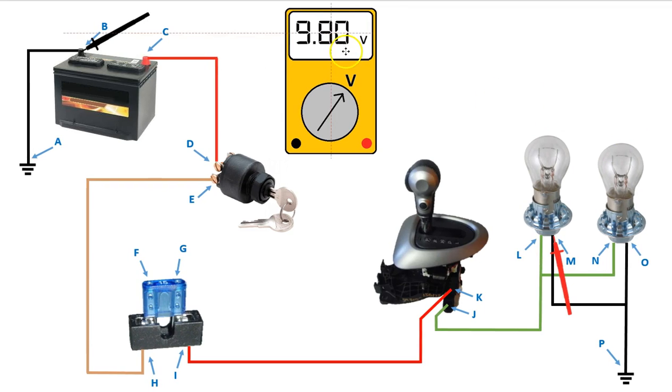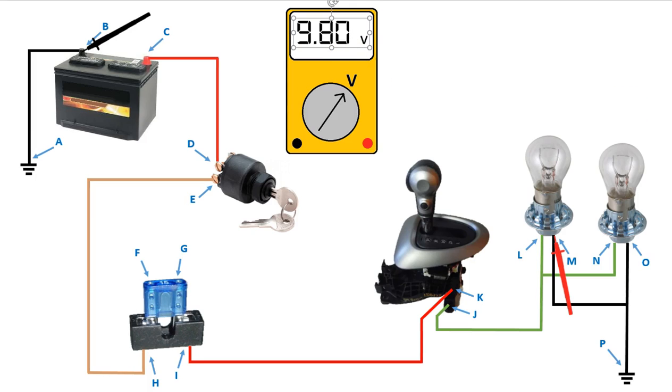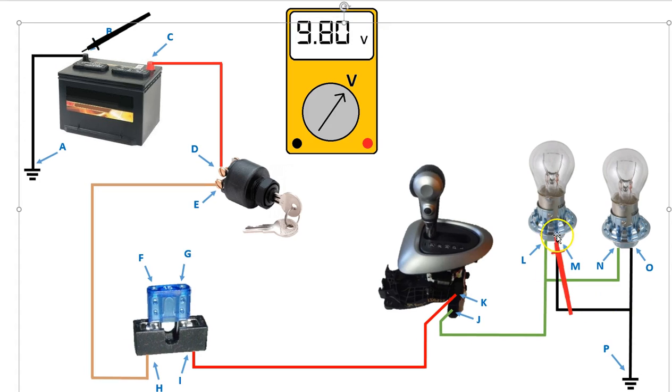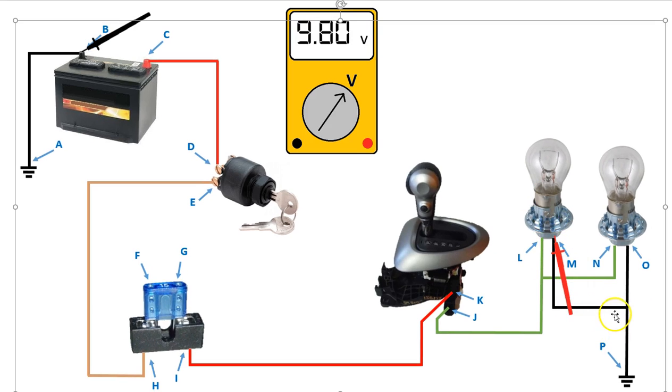But we don't. We get a reading of 9.8 volts. That tells us that somewhere between this point, through the metal on the car, and up to this point, we have lost 9.8 volts. So now we know that the problem is in the ground side of the circuit.